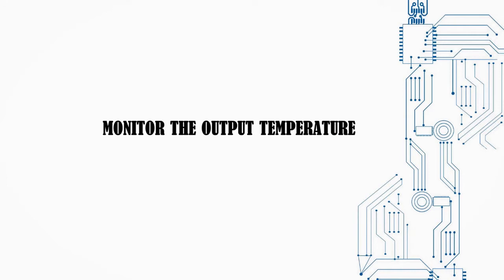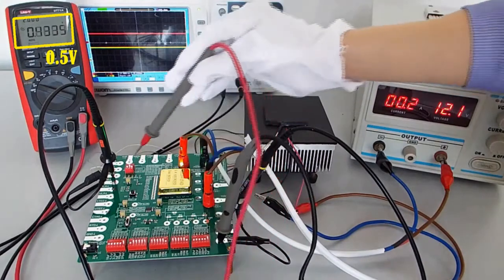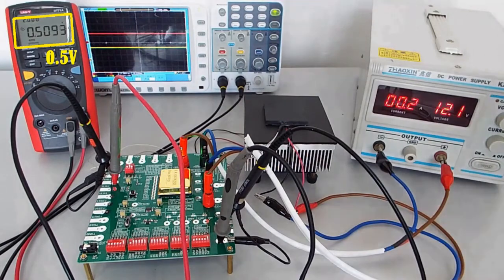Monitor the output temperature. Change the red light of the multimeter from TMS pin to TMO pin. At this time, the reading of the multimeter is 0.5 volts.